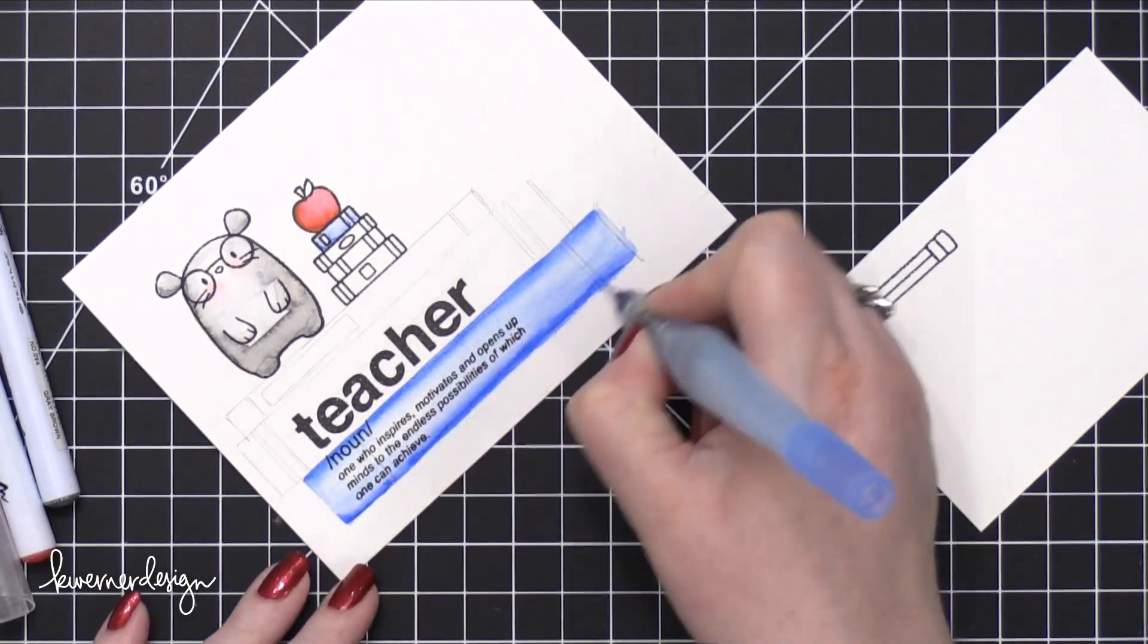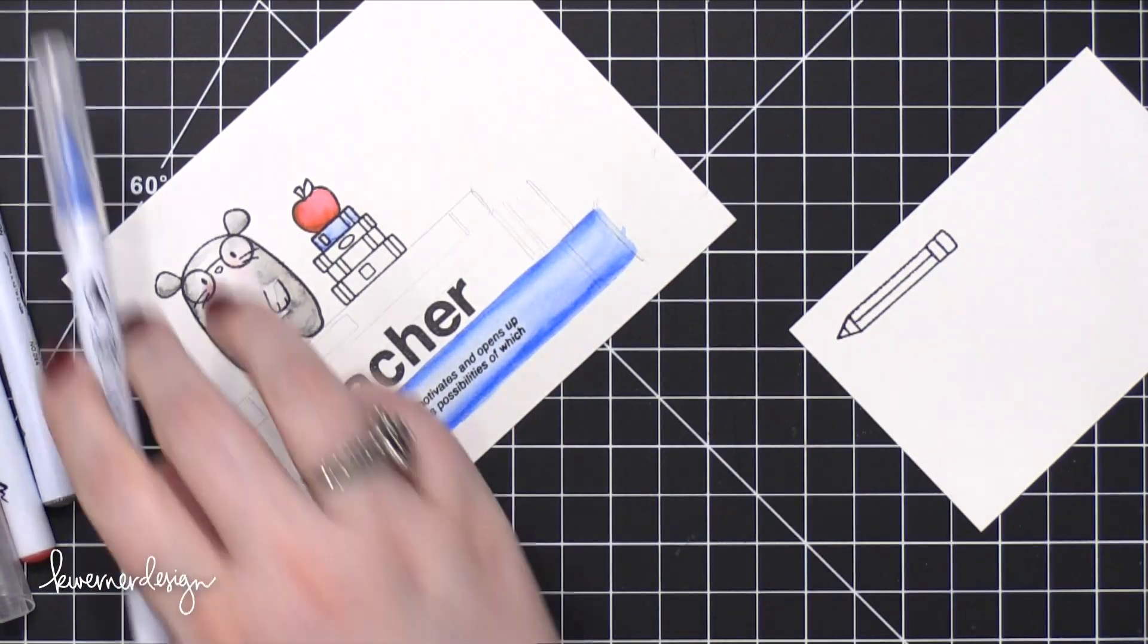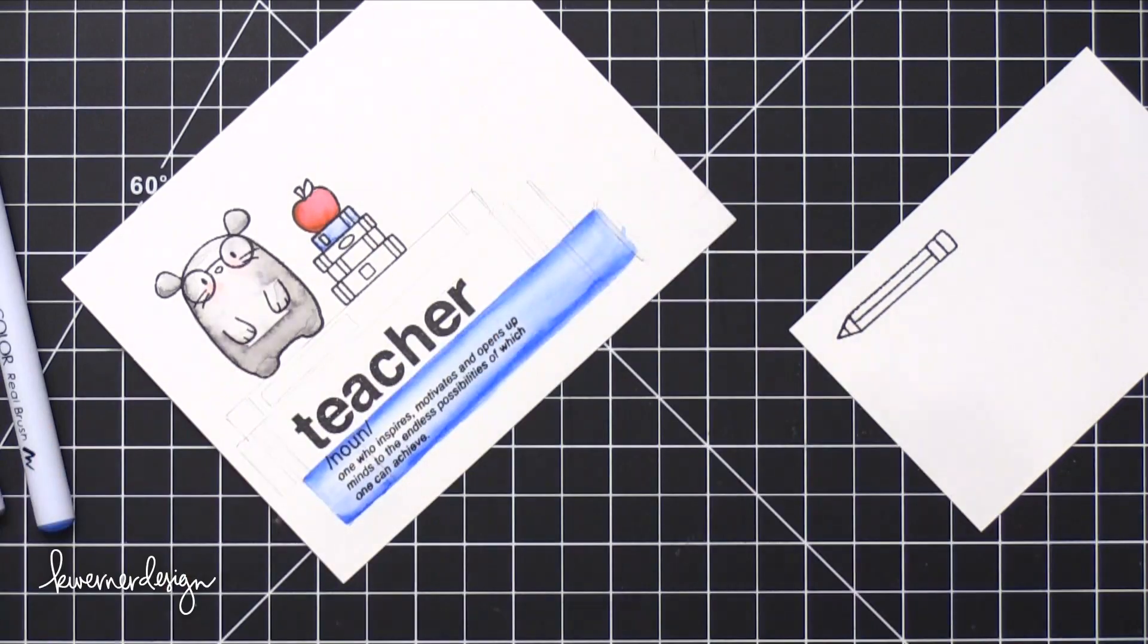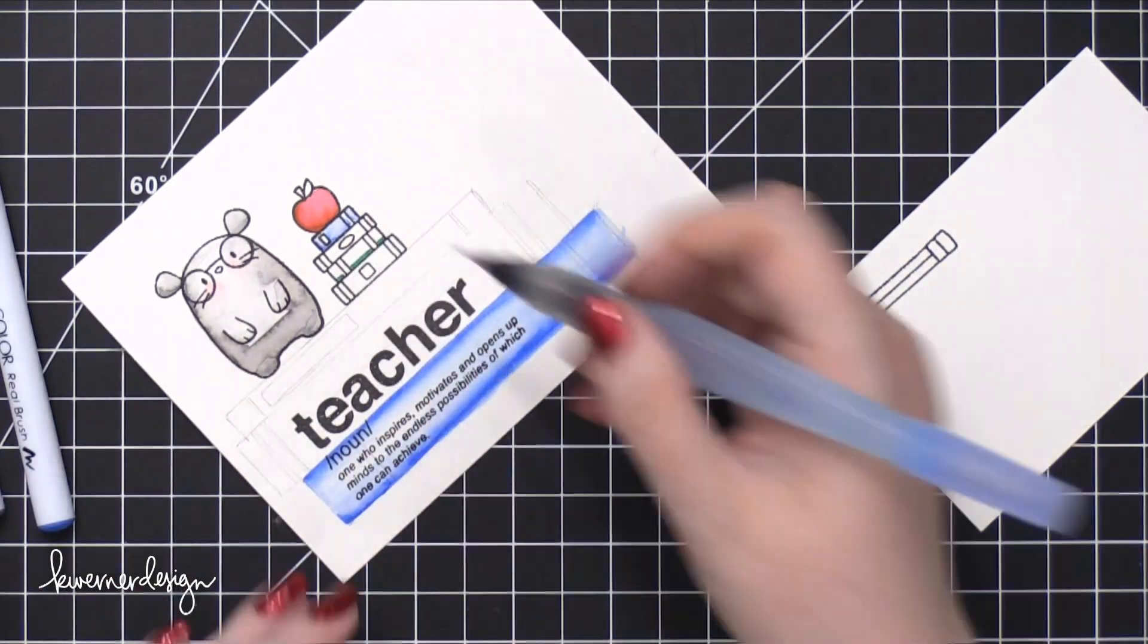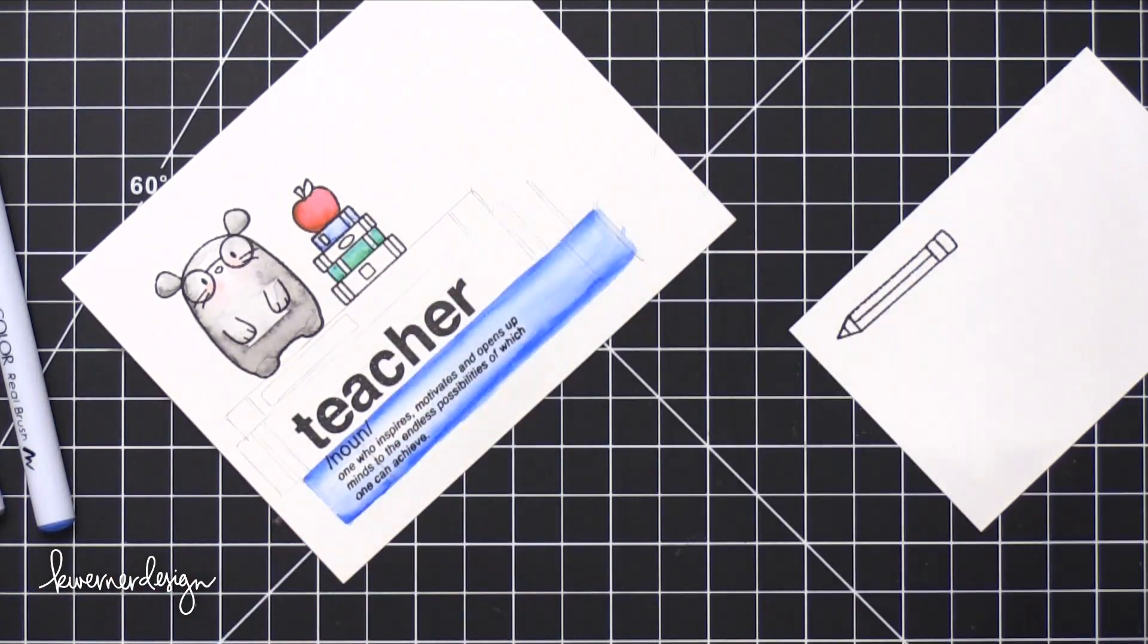I figured that these colors would be pale enough that it doesn't matter that the definition stamp is over the top in black. It was still legible, so I didn't have to worry about it.